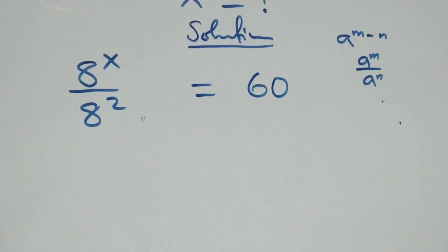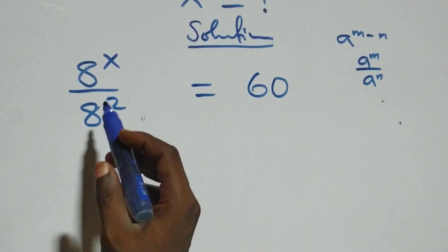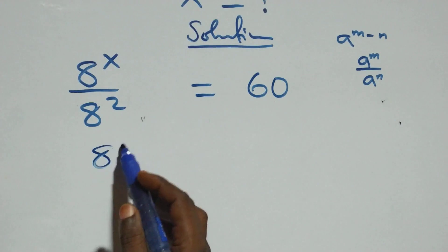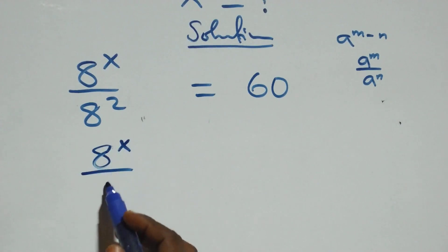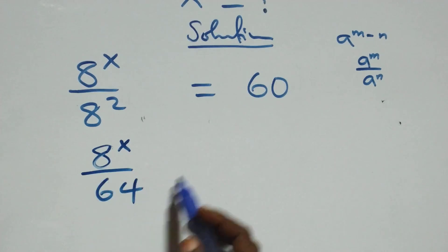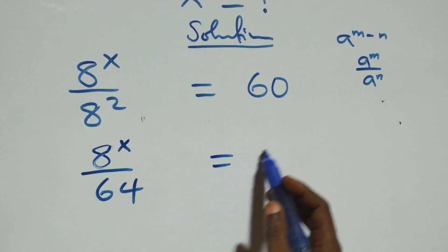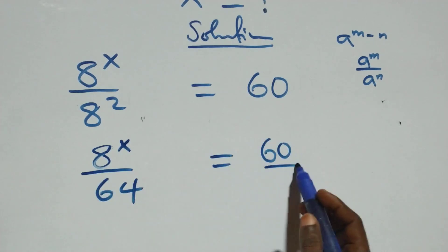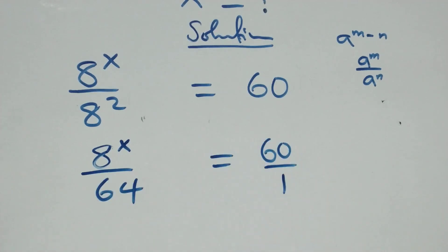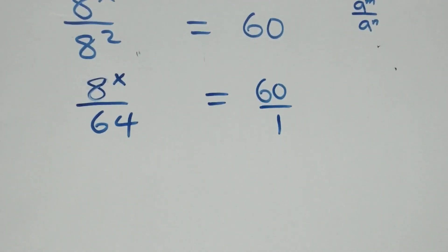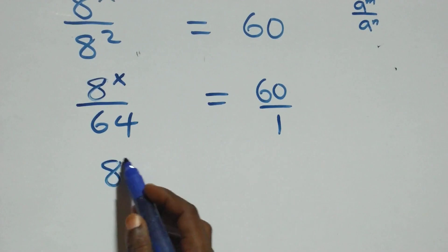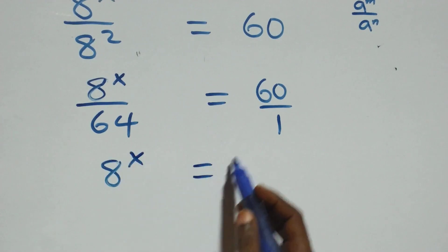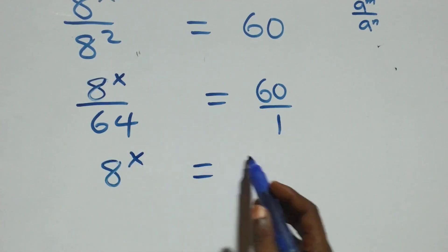This is the same as a raised to power x over eight squared equals sixty over one. Next we cross multiply: a raised to power x times one, which is just a raised to power x, equals sixty times sixty-four.